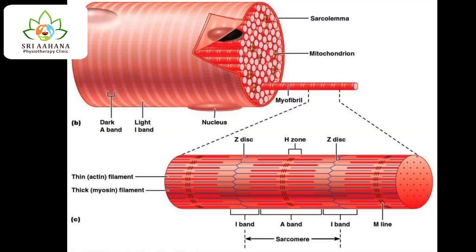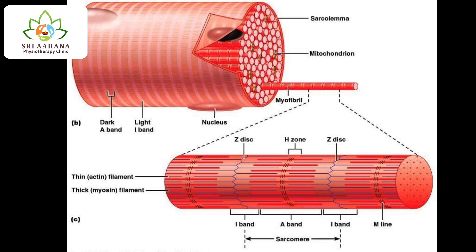Now let us see about the contractile unit. The contractile unit has a Z-disc, as shown in the figure. This Z-disc is linked to the thin filaments called actin. The area of the sarcomere that is overlapping the thick and thin filaments in the center is called the A-band, or the anisotropic band.